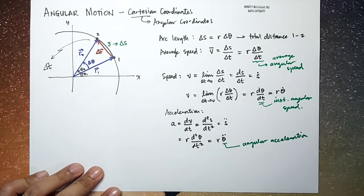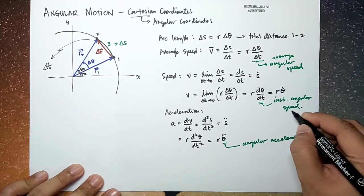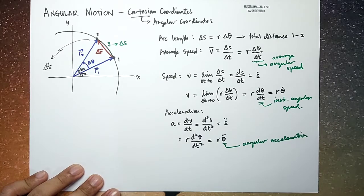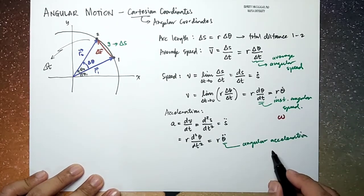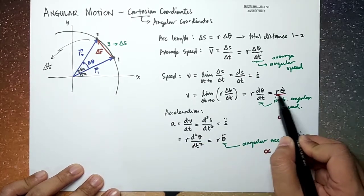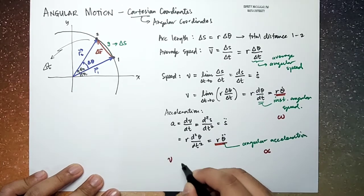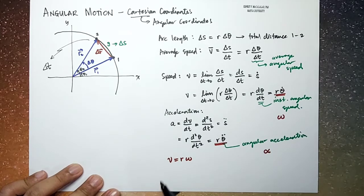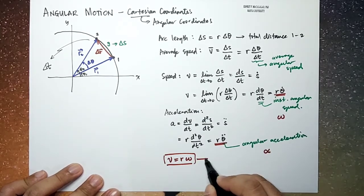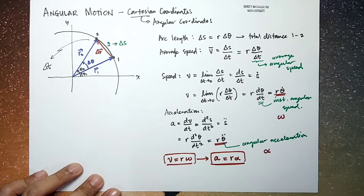In your introductory physics class, we usually write the instantaneous angular speed as omega and the angular acceleration as alpha. So looking at these expressions, you can write the velocity or speed as r times omega — that's the usual form you already know — and acceleration as r times alpha.